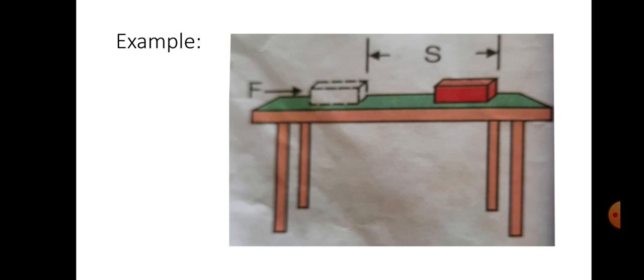Here, on the wooden block, the force F is applied. Due to that force, the object changes its position through a displacement S. The object is able to change its position due to the energy transferred to it by the force doing the work. Thus, whenever work is done on an object, its energy either increases or decreases.